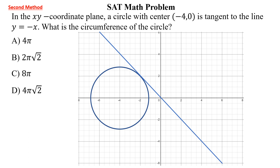Now we are going to solve the same question by a second method. Let this be the radius of the circle, and this length is a. This angle is 90 degrees. This is a right-angle triangle, and this angle is 45 degrees because the line y = -x makes a 45-degree angle, so this angle will also be 45 degrees.